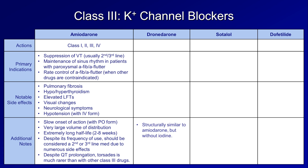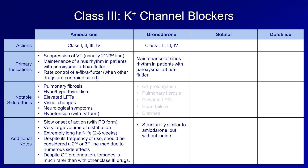Dronedarone is interesting because it is structurally similar to amiodarone, but without the iodine. Some people originally thought it could be used whenever amio was, but with fewer side effects. Unfortunately, that has not been borne out by studies. Its mechanisms of action are roughly similar to amio, in that it shows class I, II, III, and IV activity, but currently its only conventional indication is in the maintenance of sinus rhythm in patients with paroxysmal AFib and AFlutter. It seems to cause QT prolongation along with pulmonary fibrosis, LFT elevation, heart failure, and diarrhea. Very importantly, it is contraindicated in patients with heart failure and/or permanent AFib, as studies have shown worsened mortality when the drug was used in patients with those diagnoses.